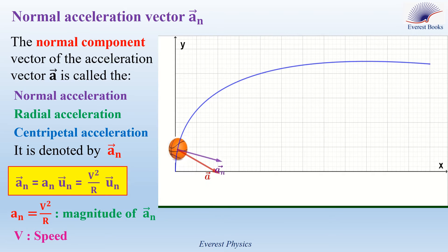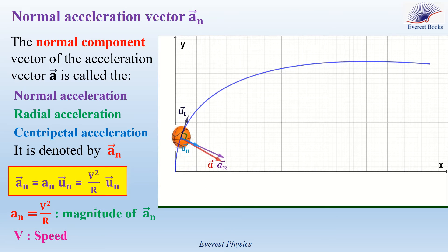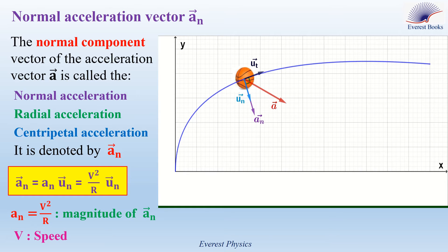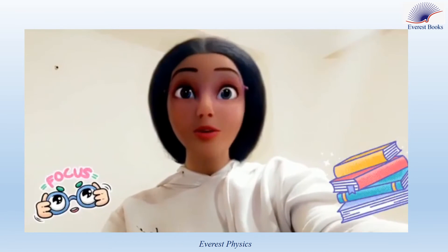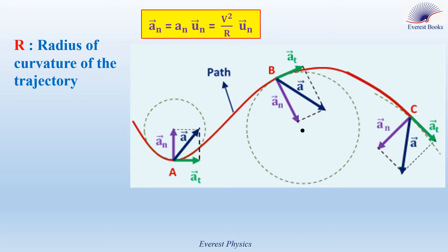Watch this animation — it shows the acceleration vector A and its normal component A_N. As you see, A_N is always normal to the trajectory at each point, and it is along the principal normal direction to the curve. u_N is a unit vector along the principal normal direction to the curve, and A_N is directed along the direction of u_N. Focus, please — this is important. R is the radius of curvature of the trajectory at any point.